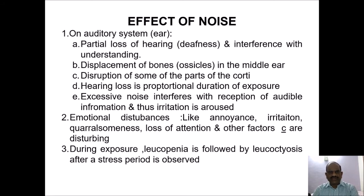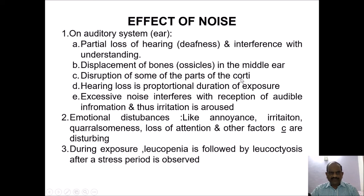The next environmental factor is noise. Effects of noise on the auditory system include partial loss of hearing and interference with speech understanding, displacement of ossicles in the middle ear, disruption of parts of the organ of Corti, and hearing loss proportional to duration of exposure. Excessive noise interferes with reception of audible information, causing irritation, and can also cause emotional disturbances such as annoyance, irritation, quarrelsomeness, loss of attention, and other disturbing factors.